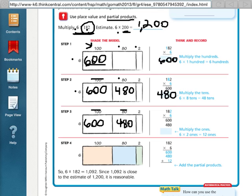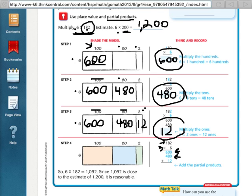We've done our hundreds, and we've done our tens, and now we do our ones. So we've got 6 times 2. That's an easy one, 12. So now we've got our final partial product, which is 12. We can say that 182 times 6 would be 600 plus 480 plus 12.